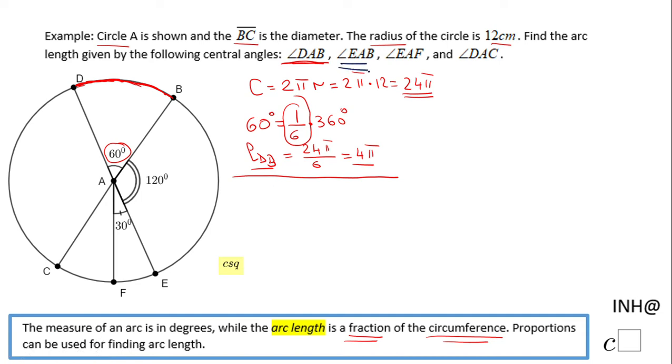EAB is this angle, which is 120, and 120 degrees is one-third of 360, or 360 divided by 3 if you want it that way. So the length of this arc...